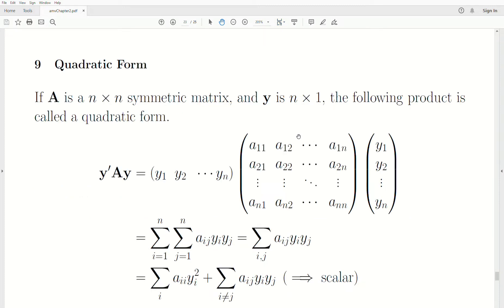Here we're going to look at quadratic forms. These are so important in linear models and in multivariate analysis that we're going to do. So if A is a symmetric matrix, Y is an n by 1 vector, then the following product is called a quadratic form. So Y transpose A Y.